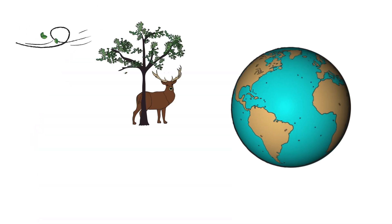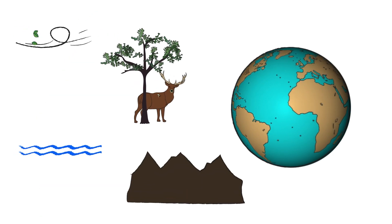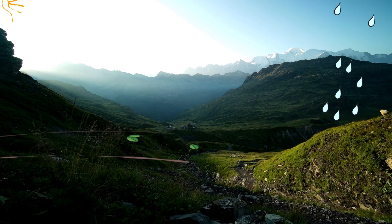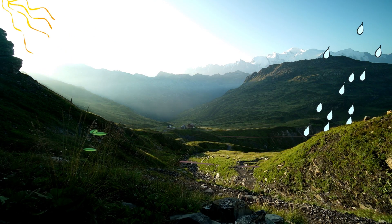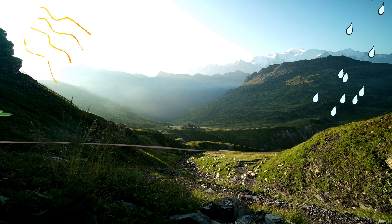The earth system has four components: the atmosphere, biosphere, hydrosphere, and the geosphere. Physical, chemical, and biological processes occur within each component and between components.